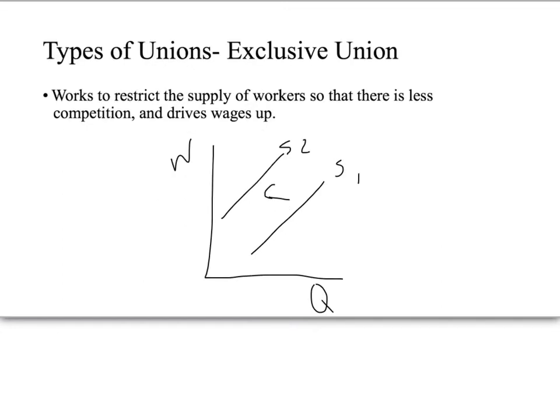One of the types of unions works to affect supply directly. That type of union — we'll discuss unions altogether at a later time — is called the exclusive union. What this type of union does is work to restrict the supply of workers so that there is less competition and, therefore, it drives wages up.